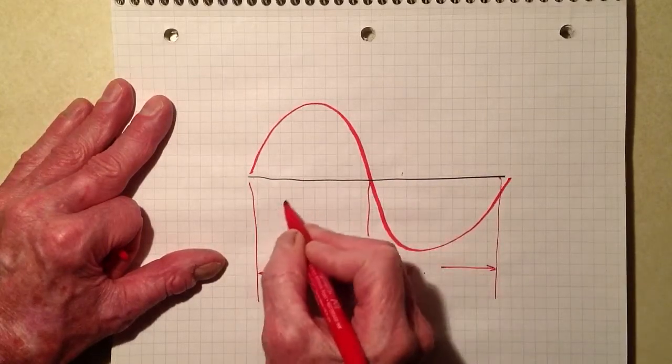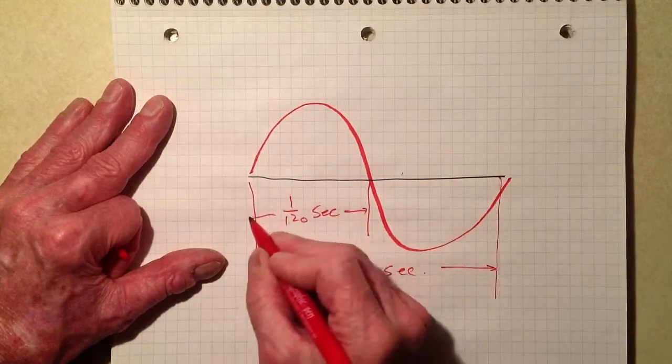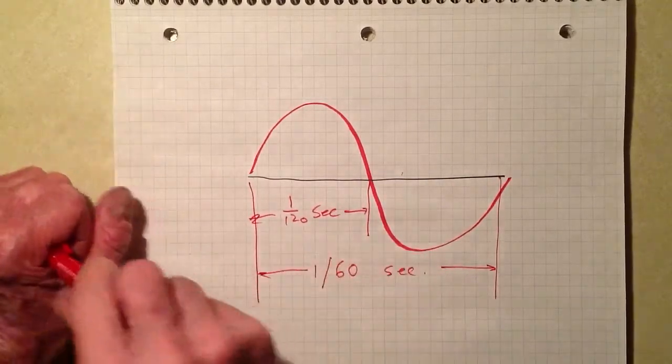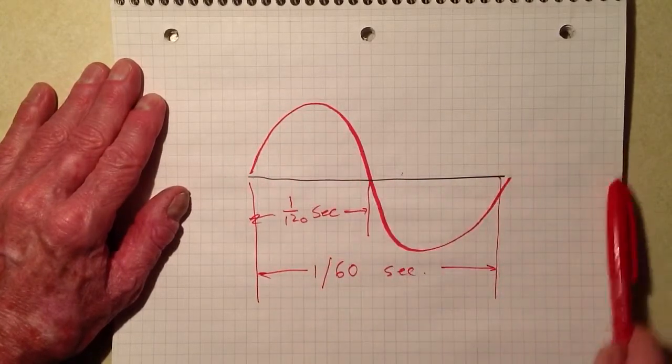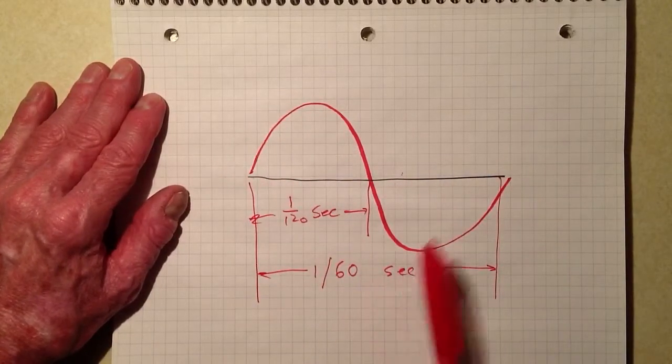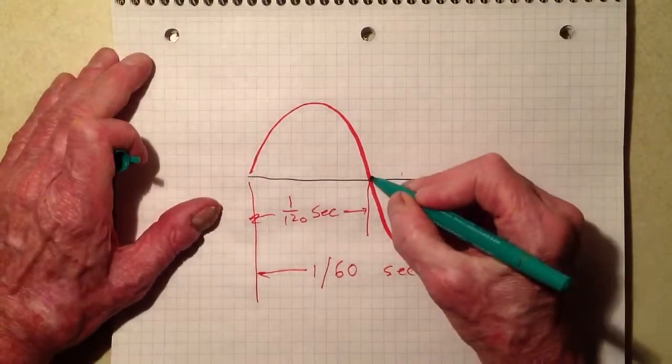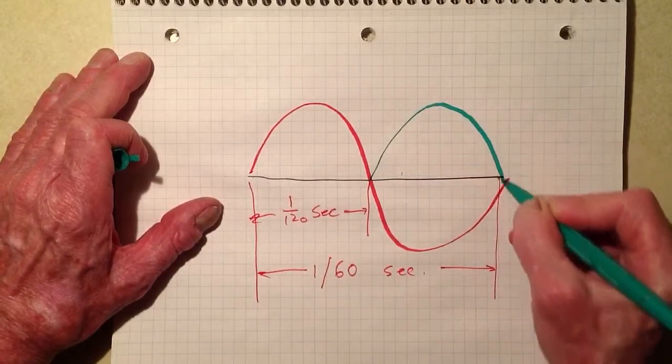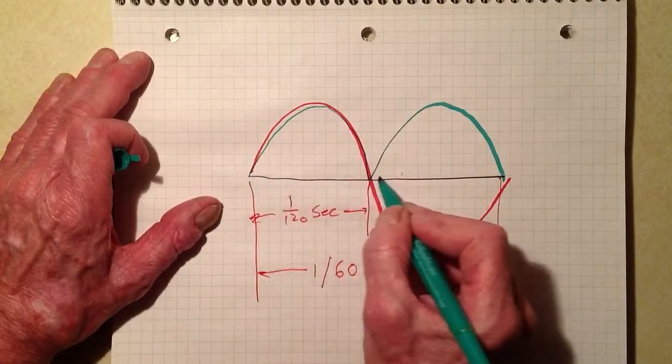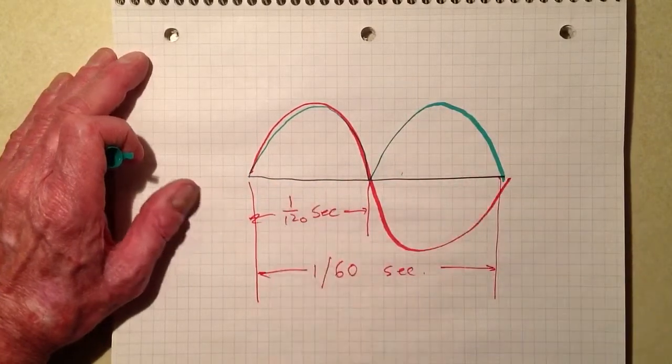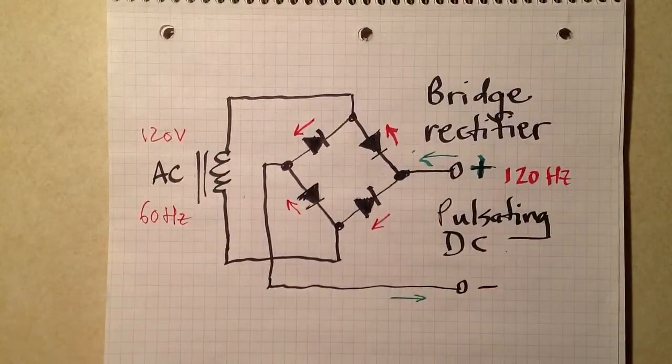A half a cycle, therefore, is one-120th of a second. Well, a half-wave power supply only takes advantage of one-half of the waves, so you get a 60-hertz ripple frequency at the output. But a full-wave supply, in effect, takes the other side of the wave and inverts it to give you pulsating DC. And that frequency, each pulse, takes one-120th of a second. And that's why you get a 120-hertz ripple.